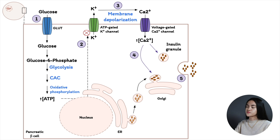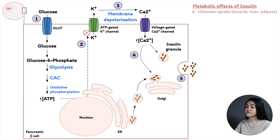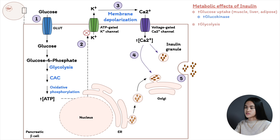This feedback loop is what regulates insulin release. Insulin stimulates glucose uptake by muscle and fat tissue via the GLUT4 transporter. There is also increased glucose uptake by the liver, increasing glucokinase activity, leading to glucose oxidation via glycolysis and pyruvate oxidation to acetyl-CoA.